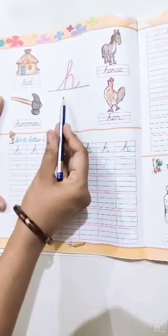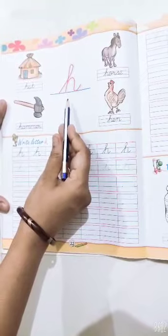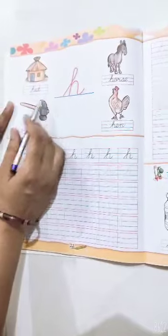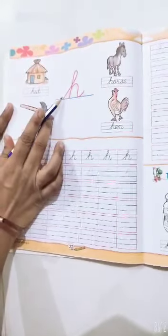H. What is this? This is small H. Now come to the pictures which comes from H.